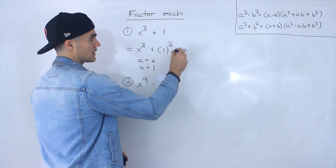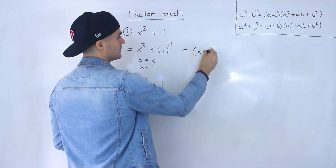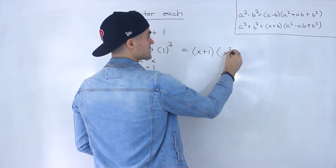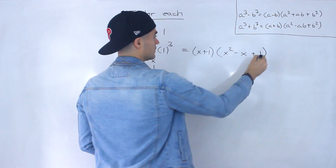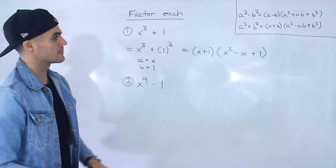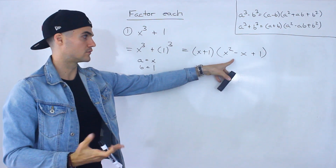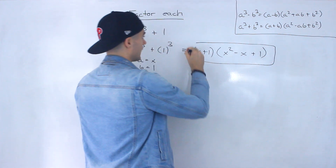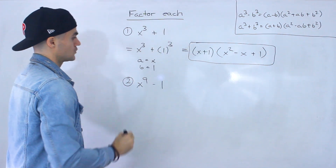All we have to do is plug in x and one for a and b. So this would be a plus b, giving us x plus one. Then we'd have x squared minus one times x, which is x, plus one squared, which is one. Remember this second bracket can never factor further. So this is the final answer for that sum of cubes.